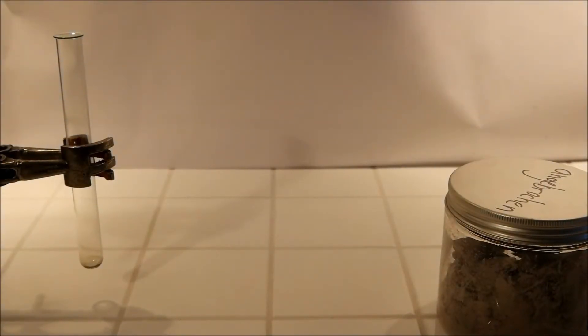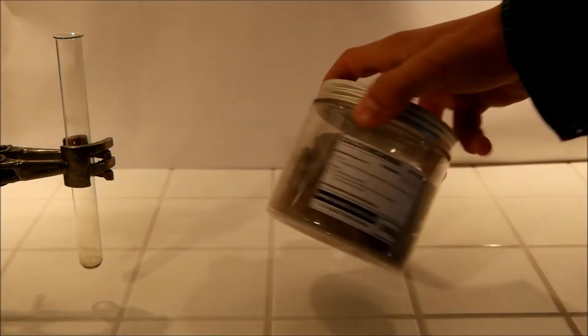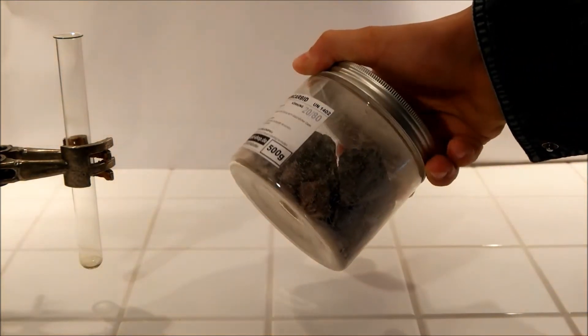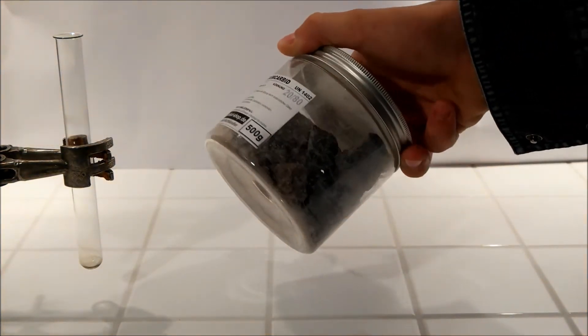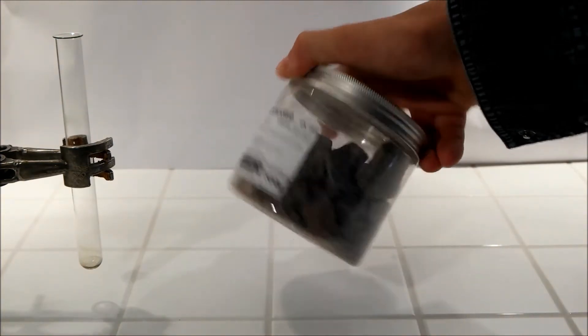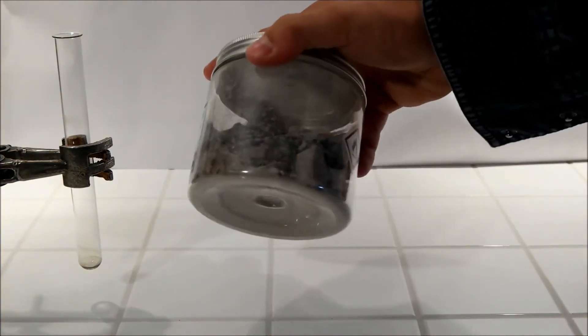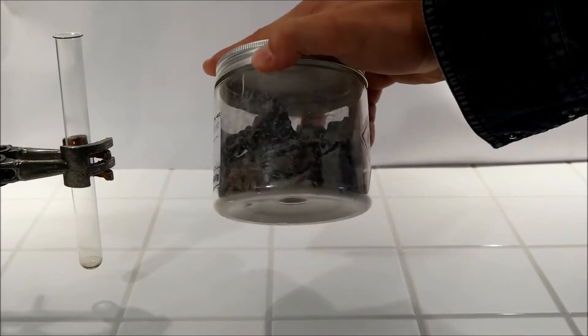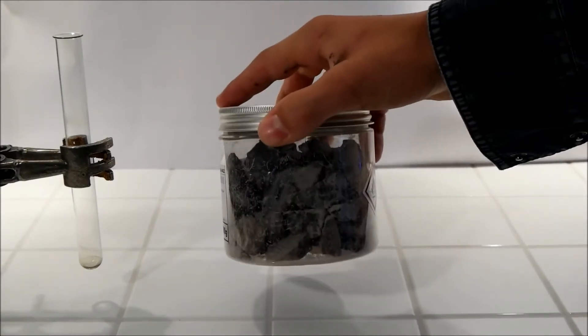But first I want to show you something else. So this calcium carbide is normally white crystals but I could only buy it in those grey chunks or in those nuggets.